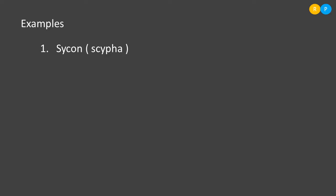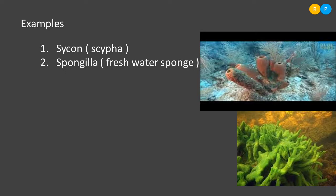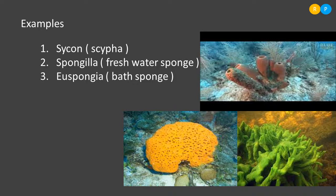Examples of sponges: Sycon (commonly called Sypha) is a marine sponge where the osculum is clearly visible at the terminal region. Spongilla is commonly called fresh water sponge, as it is habited to fresh water. Euspongia is called bath sponge because its texture is similar to the bath sponge we use for scrubbing while bathing.